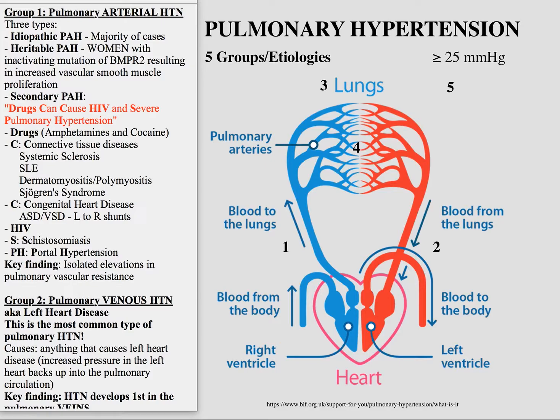The hardest part of understanding all of this is really thinking about the causes of pulmonary hypertension, because there's a large number of potential causes. The traditional breakdown actually identifies five groups or etiologies for the causes of pulmonary hypertension. I want to focus this video on that, because that's the part that's hardest to understand and remember. I'm going to use the traditional five-group method and break it down in an easy-to-understand way.